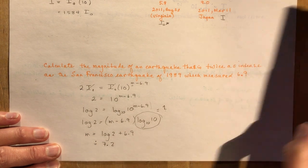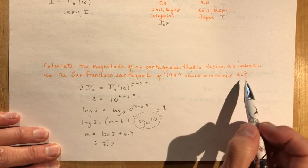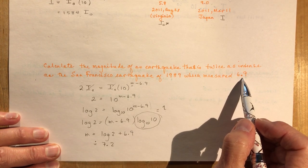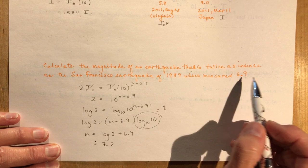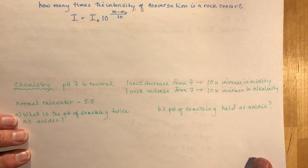So that means that to go twice as intense, I only have to go up 0.3, 0.3 from 6.9. So let's take a look at sound now.